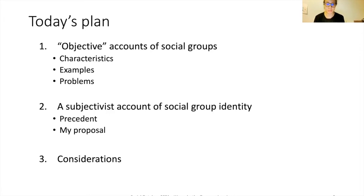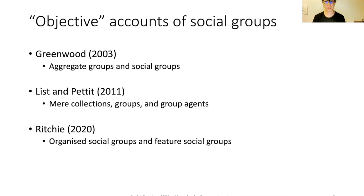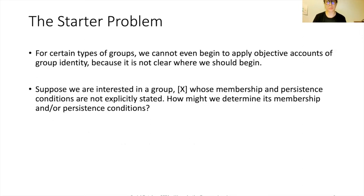Objective accounts of social groups include accounts by Greenwood, who distinguishes between aggregate groups and social groups; List and Pettit, who distinguish between mere collections, groups, and group agents; and Catherine Ritchie, who distinguishes between organized social groups and feature social groups.